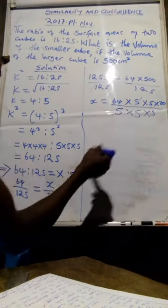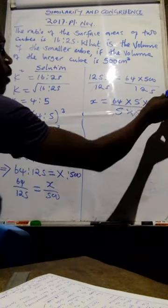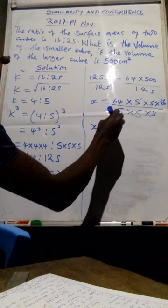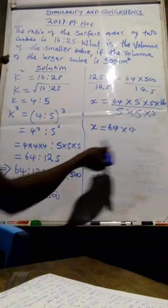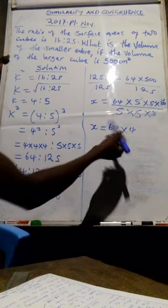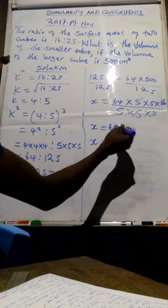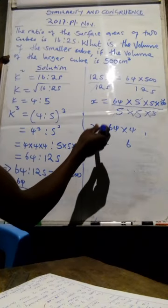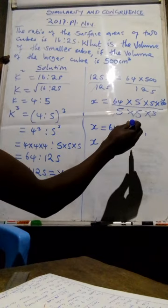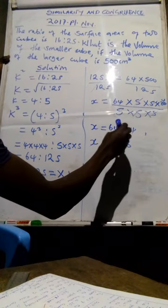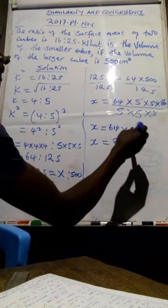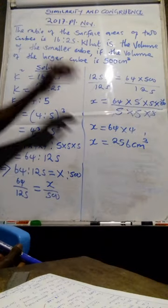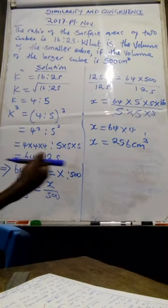Then from there on top we are going to remain with 4 times 4. Now this one it is very easy, now it will be easy for you to write this one without using a calculator. Then x will be equal to 4 times 4, it is 16, write 6, carry 1, 4 times 6 it is 24, plus 1 it will be 25. 256, so this is the volume of the smaller cube, then it ends there.